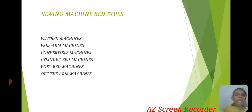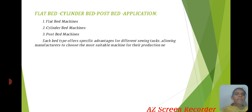Sewing Machine Bed Types include: Flat Bed Machine, Free Arm Machine, Convertible Machine, Cylinder Bed Machine, Post Bed Machine, and Off-the-Arm Machine. Each bed type offers special advantages for different sewing tasks, allowing manufacturers to choose the most suitable machine for their production needs.